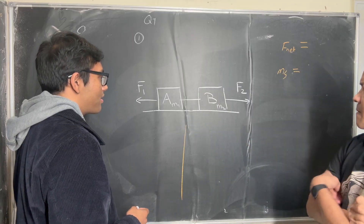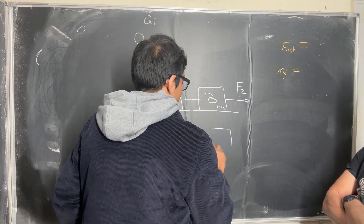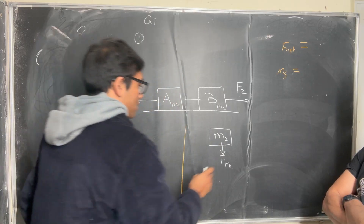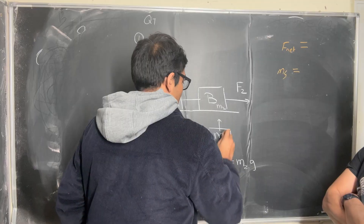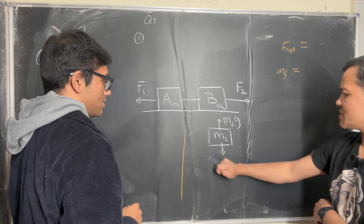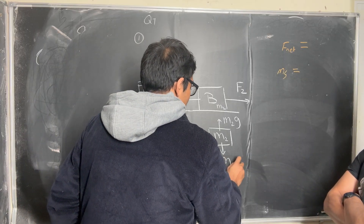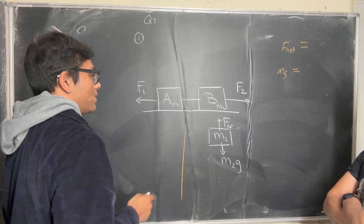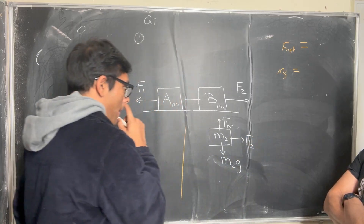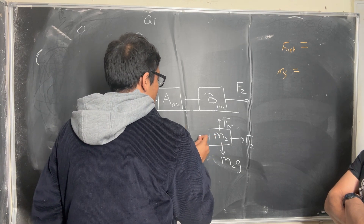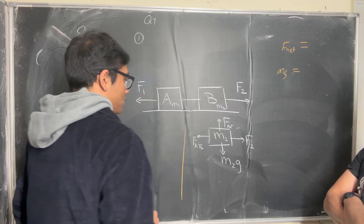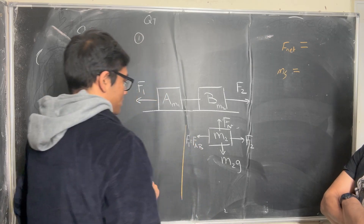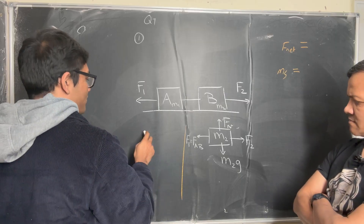So first let's draw the free body diagram for M2. So gravity, normal force — M2 is enough notation. And then there's F2 in this direction, and the force of A on B — we'll call it F_tension, or just Ft. Okay, so that's all of M2.